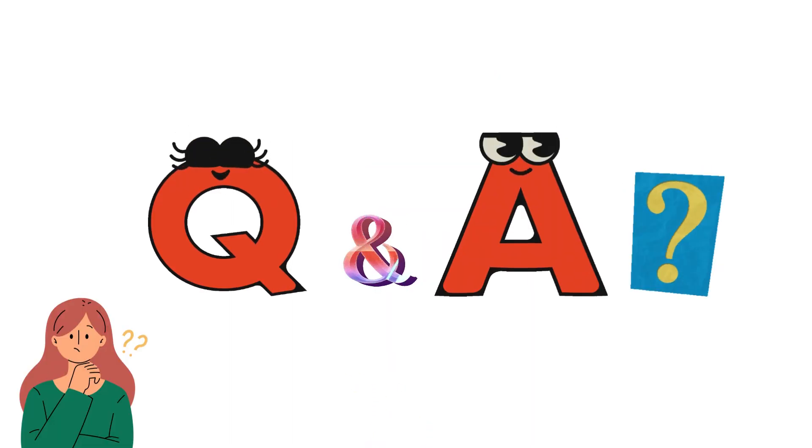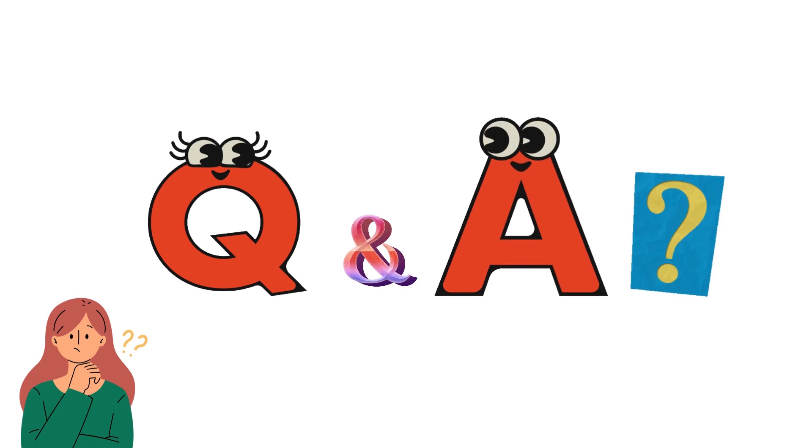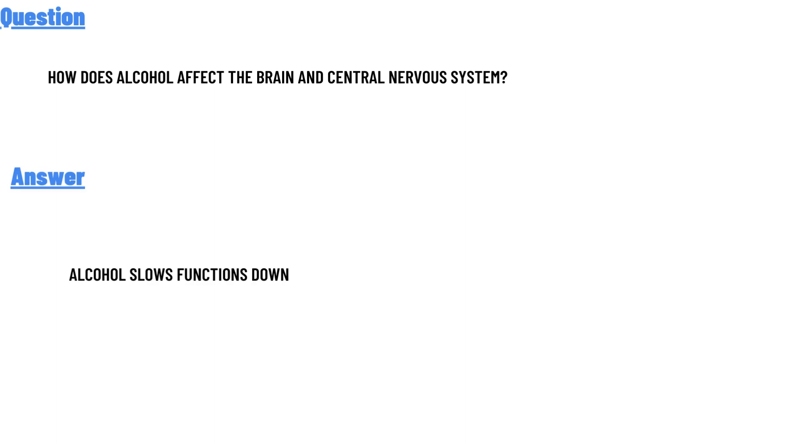Today's question is: how does alcohol affect the brain and the central nervous system? The correct answer is: alcohol slows functions down.